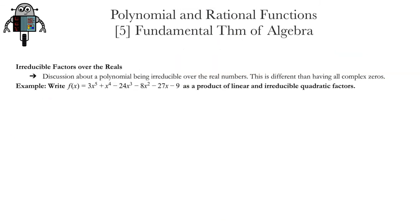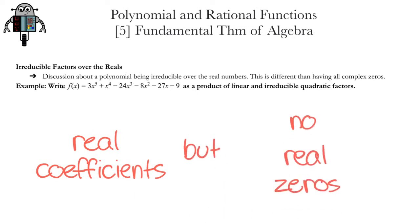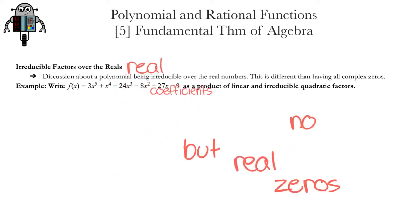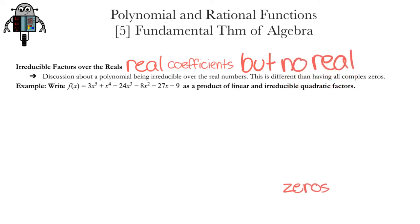We'll end this lesson with an example that highlights irreducible factors over the reals. When a factor has real coefficients but no real zeros, we call that factor an irreducible factor. We can't reduce it down to a product of linear factors only. Linear factors, meaning factors with terms that are only being raised to the first power. Okay, let's do the last example.